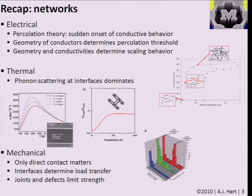Last time we had an overview of the properties of networks of nanostructures. We learned a little about what dominates the electrical, thermal, and mechanical characteristics of groups of nanostructures put together in generally random configurations. We talked about films and volumetric assemblies, and focused our discussion with examples from carbon nanotubes because they have properties that are interesting in all three areas.